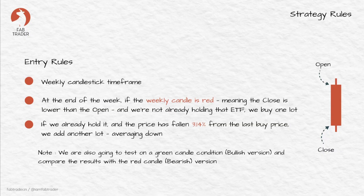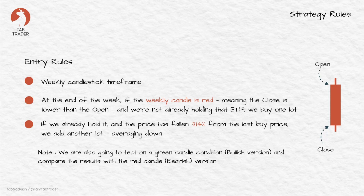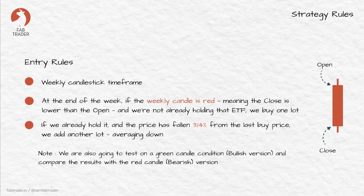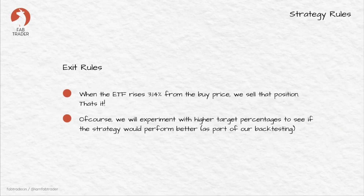Just to be clear: at the end of the week, for our selected ETFs, if that week's candle is red and we don't hold it, we buy one lot. If we already hold it, we check whether the current price has fallen more than 3.14% from the last buy — if so, we buy one more lot and average down. The exit rule is equally simple: when the ETF rises 3.14% from the buy price, we sell that position. That's it — no RSI, no moving averages, no complex indicators, just clean price action logic.